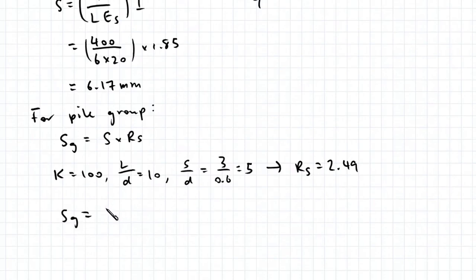Sg equals the settlement of a single pile, 6.17, multiplied by Rs, 2.49. Therefore, the settlement for the entire pile group is 15.36 mm. That's it for today's video. Hope this helps, guys.